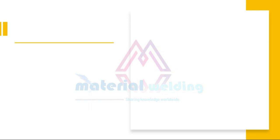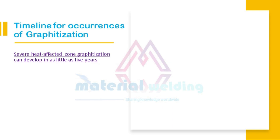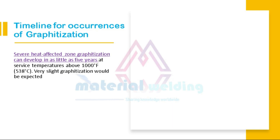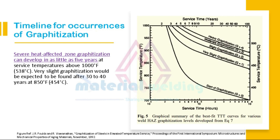Next is the timeline for occurrence of graphitization. Severe heat affected zone graphitization can develop in as little as 5 years at service temperatures above 1000 degrees Fahrenheit. Very slight graphitization would be expected after 30 to 40 years at 850 degrees Fahrenheit. The graph shown here illustrates the relationship of various HAZ graphitization levels with service temperature and service hours.